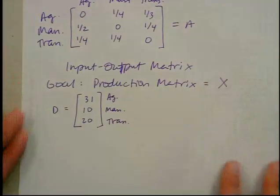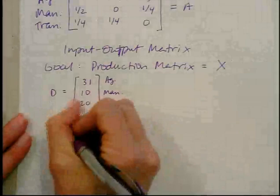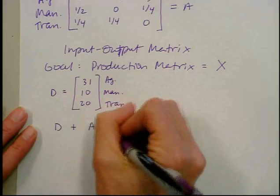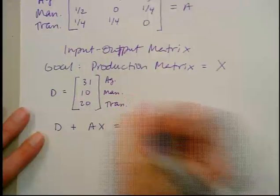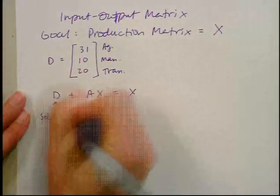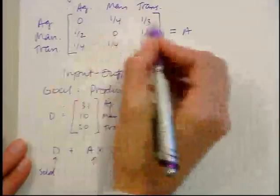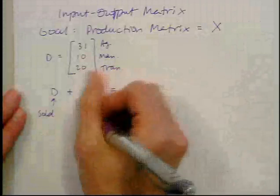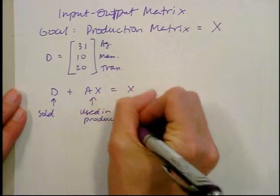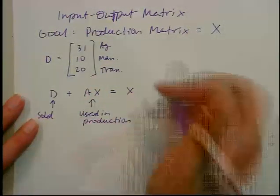The production matrix is capital X. We know that the amount demanded plus the amount used in production (which is A times X) equals the total amount produced. To clarify: D is the amount demanded — what gets sold in the market — and A times X is how much of that commodity is used up in production. So the amount sold plus what's used in production gives the total amount produced.